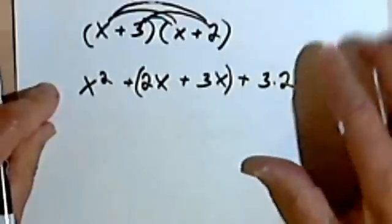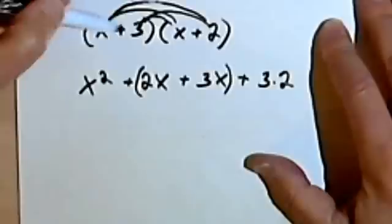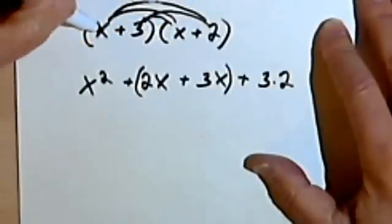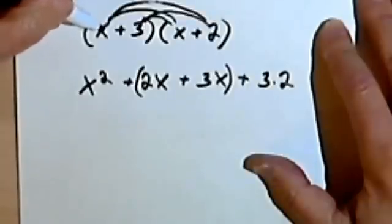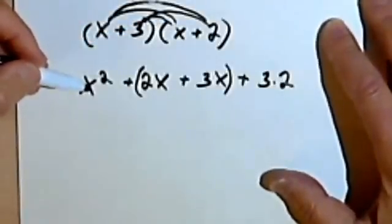So here's the point I want to make. If the first term in each binomial is just an x or just any variable with no coefficient, in other words, it's 1x times 1x or 1a times 1a, then we're going to end up with an x-squared or an a-squared.